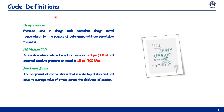One of the most important code definitions is design pressure — the pressure used in design with coincident design metal temperature. Design pressure is used to determine the required thickness of a component. In most cases it comes from the client or user and represents the most abnormal operating condition. If no design value is provided, take the maximum operating condition and add 10% to obtain the design pressure. In some cases, design pressure can be taken as equivalent to MAWP, the maximum allowable working pressure.